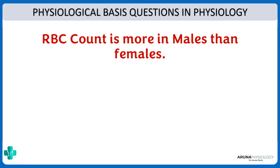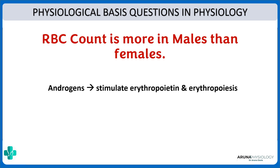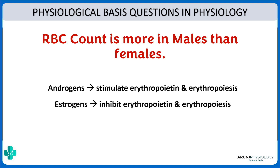A common physiological basis question: why is the RBC count more in males than in females? The common answer from students is because females have a regular menstrual cycle, but unfortunately that is not the answer. It is more in males than females because androgens present in males stimulate erythropoiesis, whereas estrogens have an opposite effect. That is why RBC count is more in males.